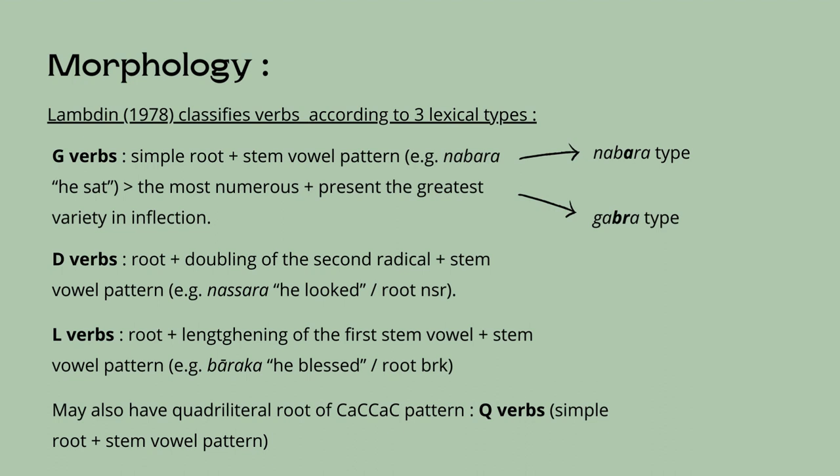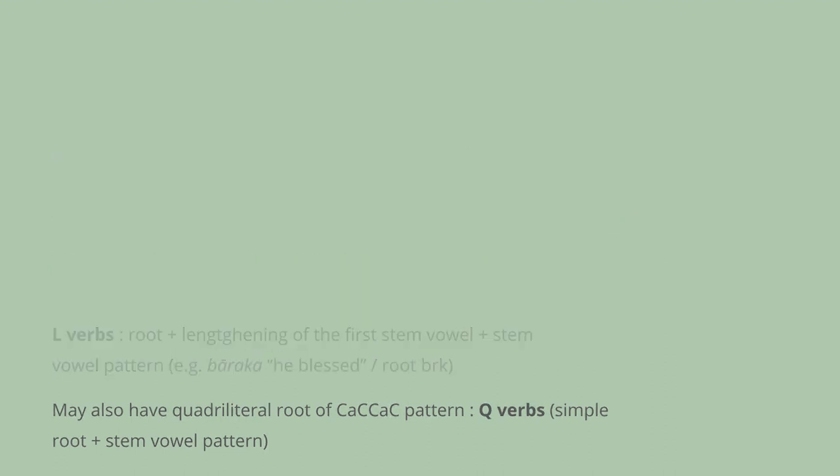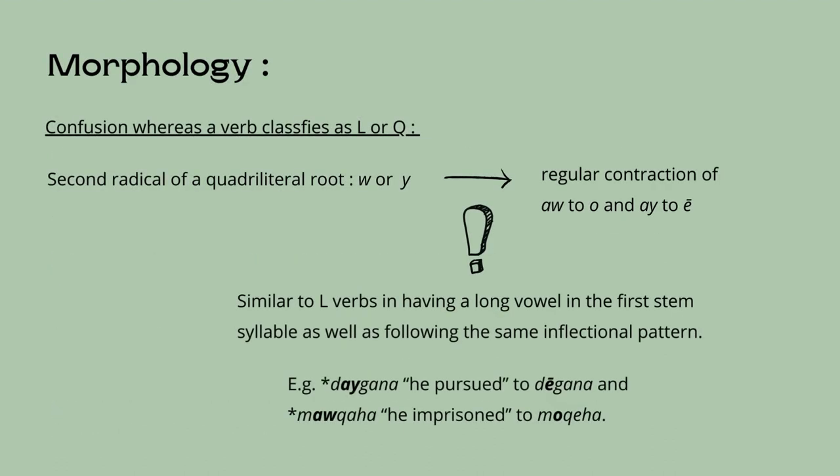Ge'ez may also have quadrilateral roots, following the pattern consonant-a-consonant-consonant-a-consonant in the perfect of the basic stem, designated as Q verbs. There might be confusion regarding whether a verb classifies as an L or Q verb, because when the second radical of the quadrilateral root is w or y, there is a regular contraction which resembles L verbs in having a long vowel in the first stem syllable as well as following the same inflectional pattern.